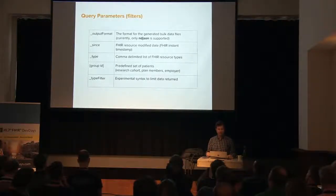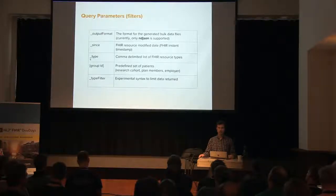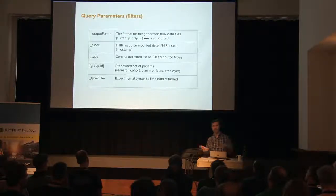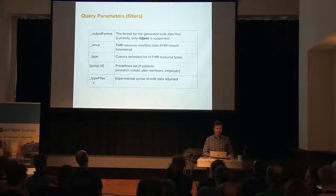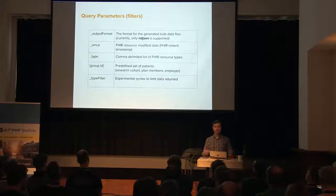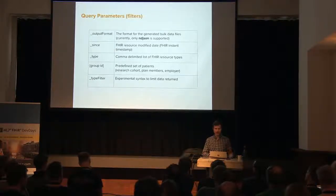There are also basic filters on the type of resources to get back — the underscore-type parameter — where the client provides a list of resource types to export. Note that some FHIR types are coarse-grained: you can export observations but can't ask for just vital signs or just hemoglobin observations. We've also added an experimental syntax for more fine-grained filtering that leans on the FHIR search API — anything expressible as a FHIR search can be passed as a type filter. We've labeled it experimental to gain experience before deciding if it's the right level for that kind of fine-grained export.